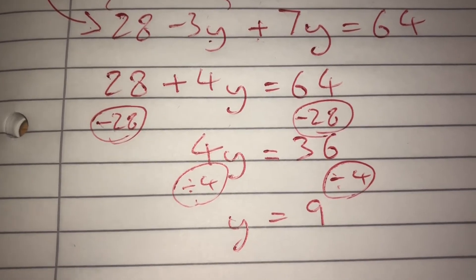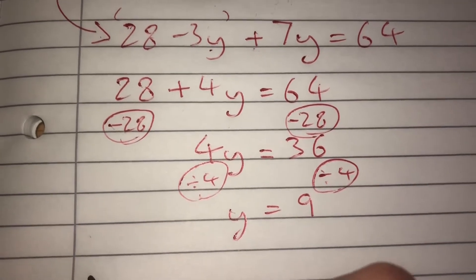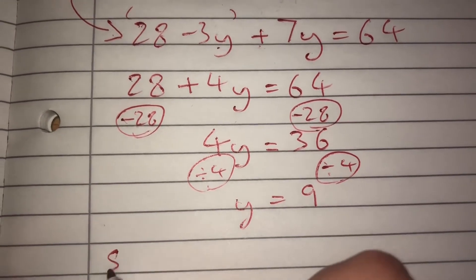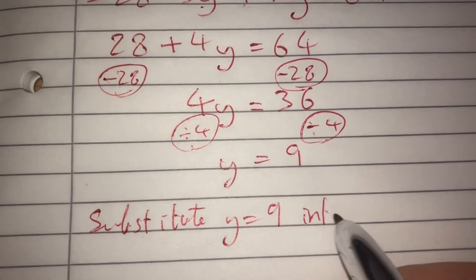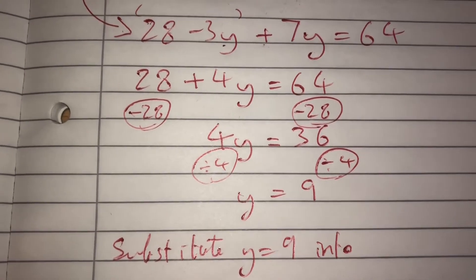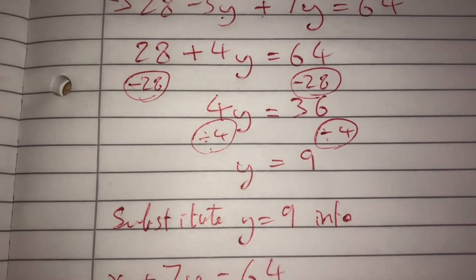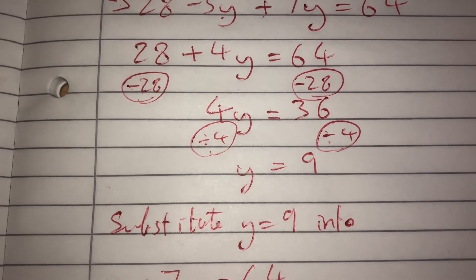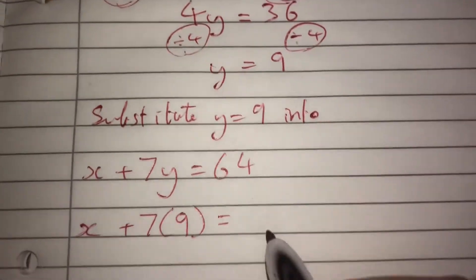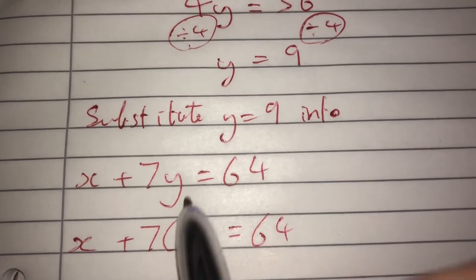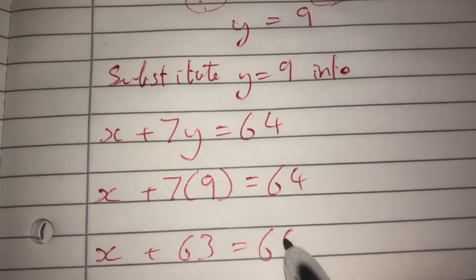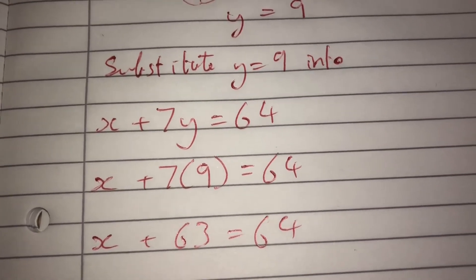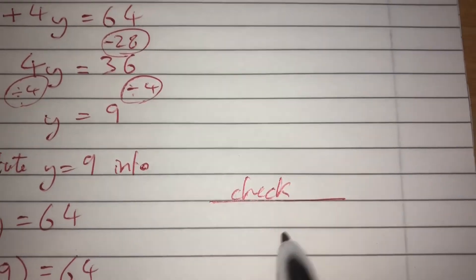Now I substitute y equals 9 back into one of the equations, just like with the elimination method. I'll use the top equation. It becomes x plus 7 times 9 equals 64. 7 nines are 63, so x plus 63 equals 64, therefore x equals 1.